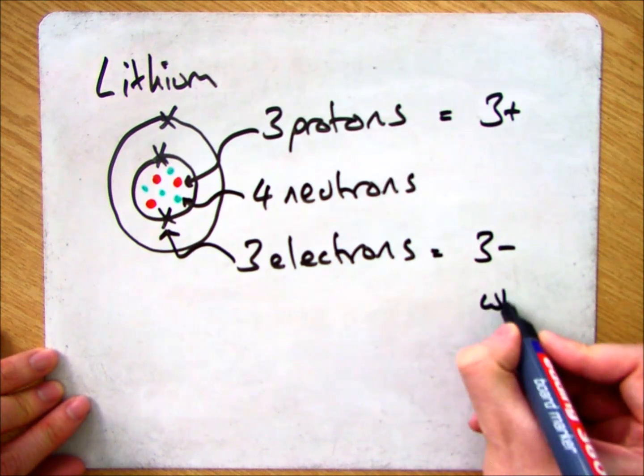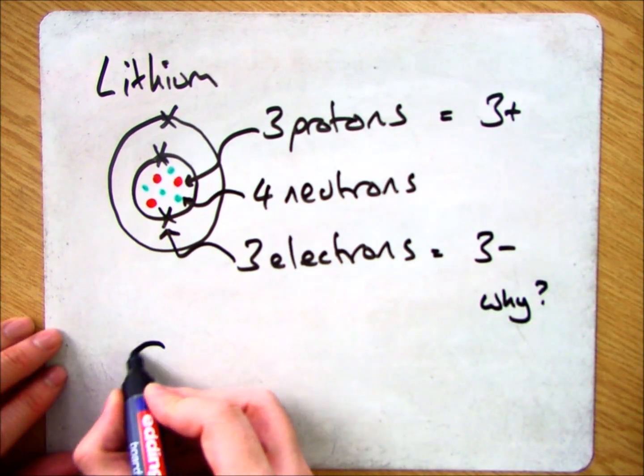So you have three protons, three positives, three electrons, three negatives. The question is, why?